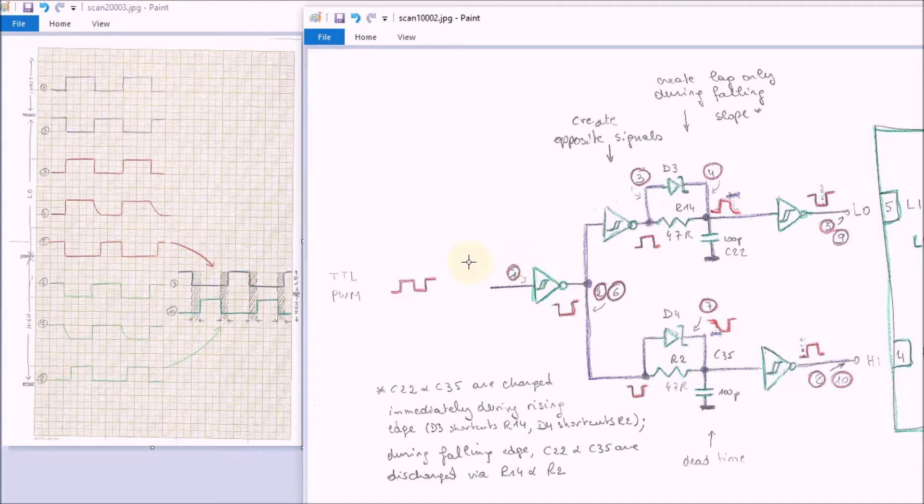So on the input we get the pure PWM signal. Then at point two, I'm going through the low part first, so I'm following this trace here. On point two we get the perfect invert of that signal.